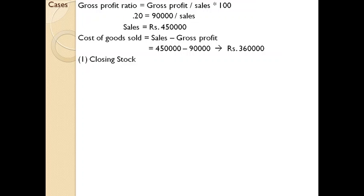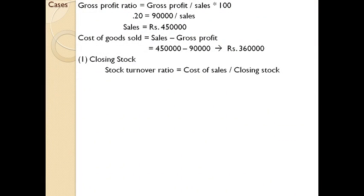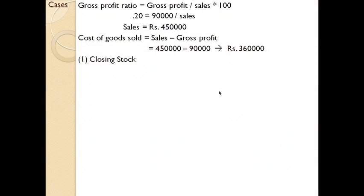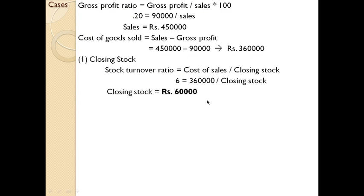If you familiarize these concepts, this question will be very easy to deal with. For closing stock, we begin with the stock turnover ratio. In the question, stock turnover ratio is given as 6, and we know stock turnover ratio equals cost of sales divided by closing stock. So 6 equals 3,60,000 divided by closing stock, giving closing stock as 60,000.